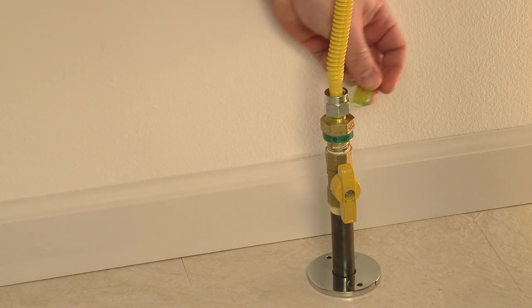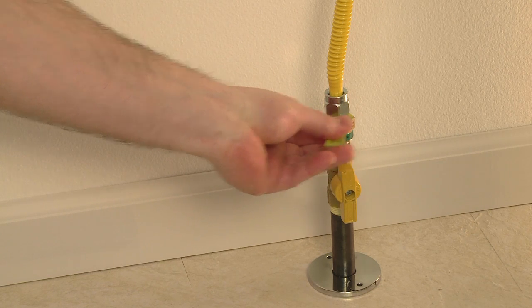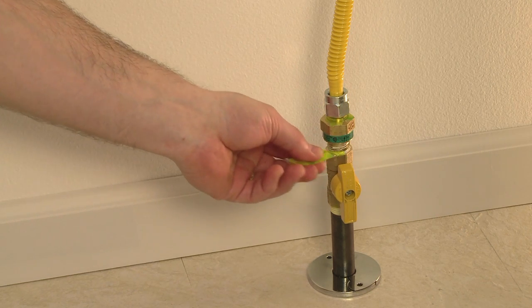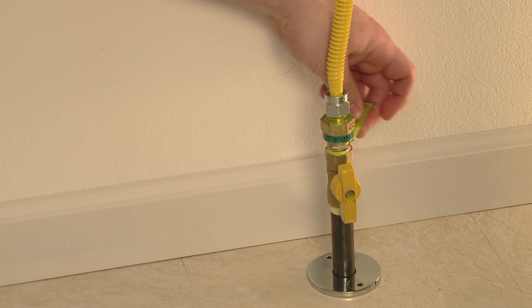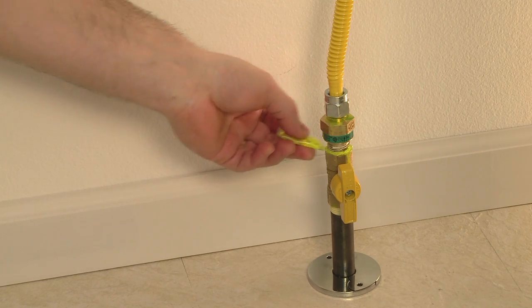With the leak detection solution in place, check all connections for bubbles. If bubbles are present, immediately close the gas shutoff valve and tighten the appropriate connection. Reopen the shutoff valve and if necessary reapply leak detection solution and examine for bubbles once again.